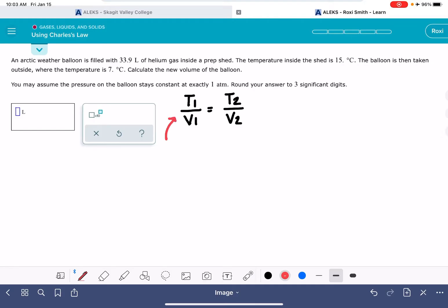T1 and V1 are the initial temperature and volume of the gas. And T2 and V2 are the final temperature and final volume.